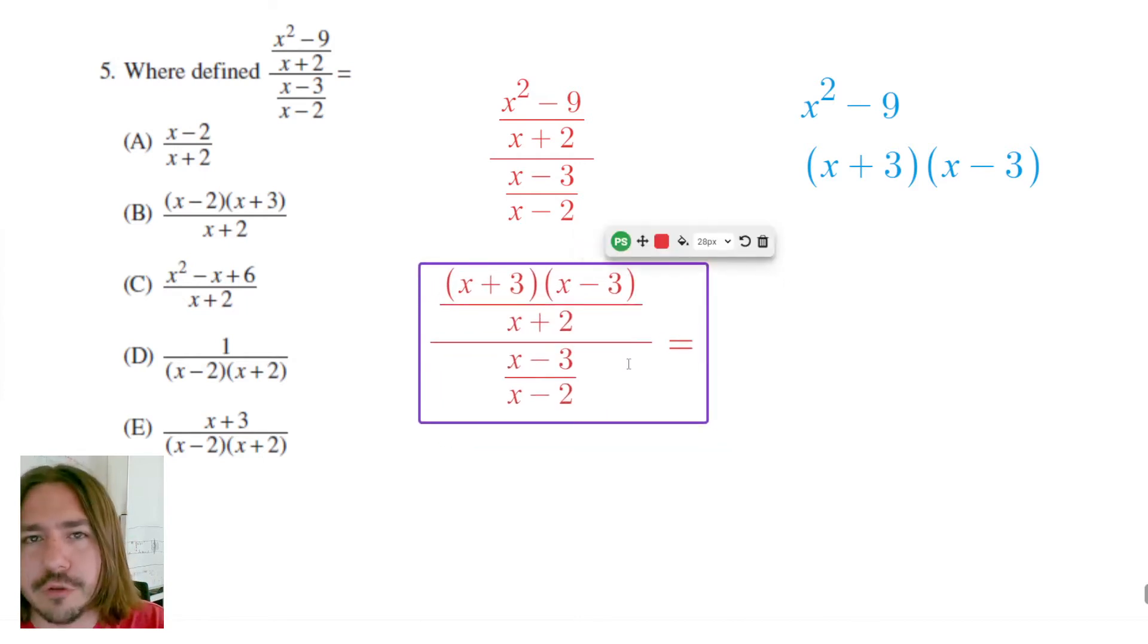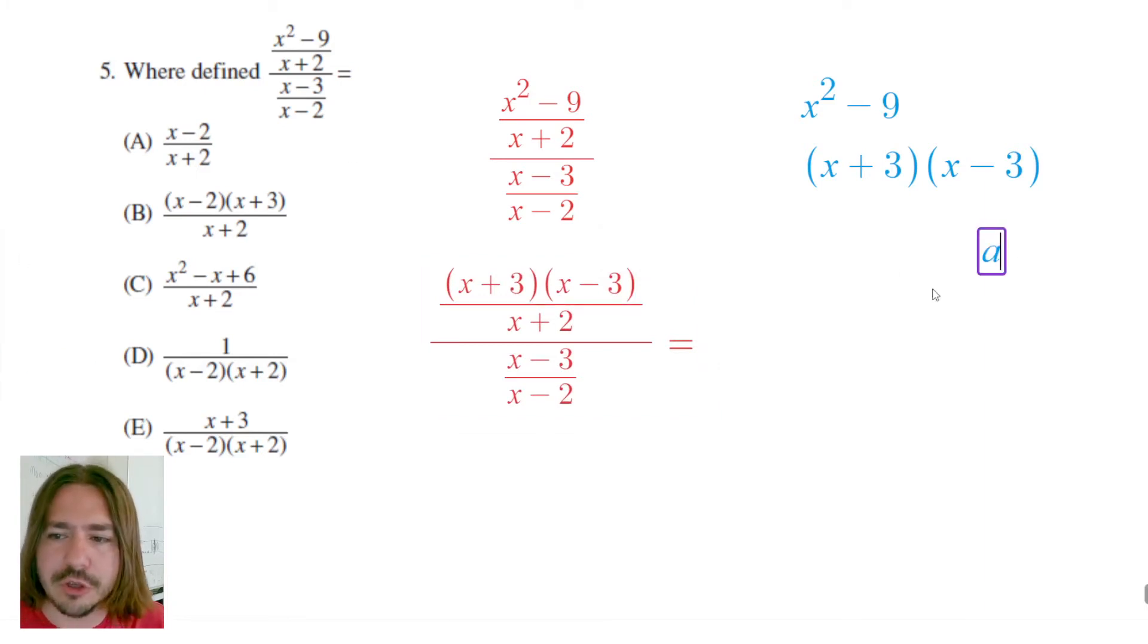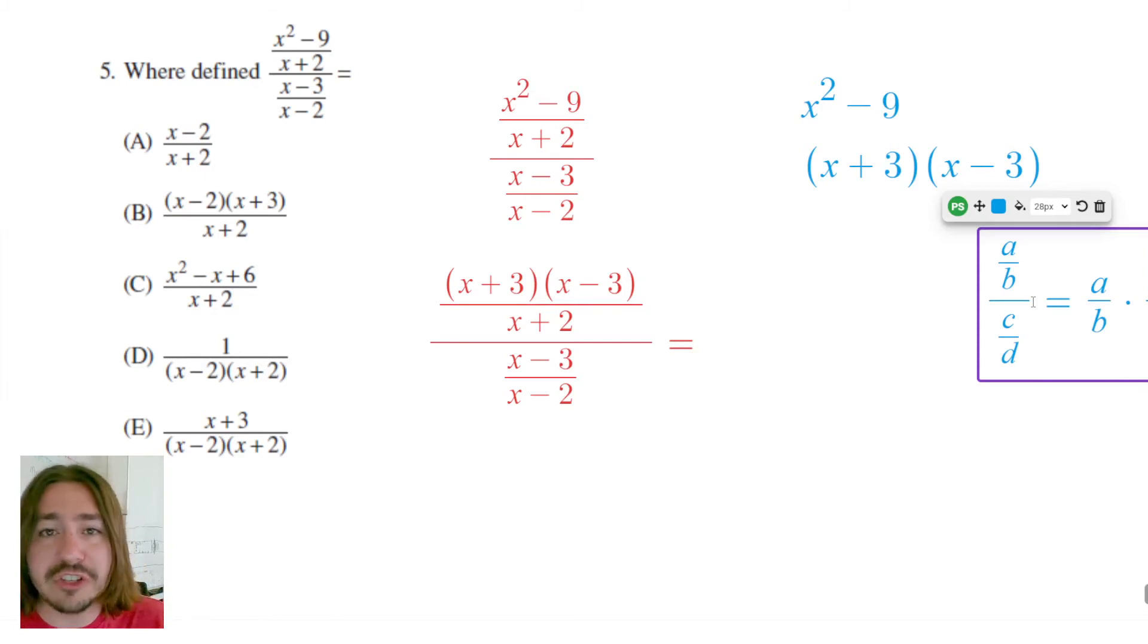Whenever you're dividing two fractions, and I'll show you this over here to the side, A over B divided by C over D, that'll be equivalent to multiplying A over B by the reciprocal of the denominator. And that's just how division is defined.